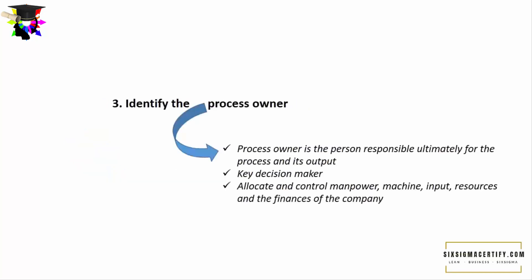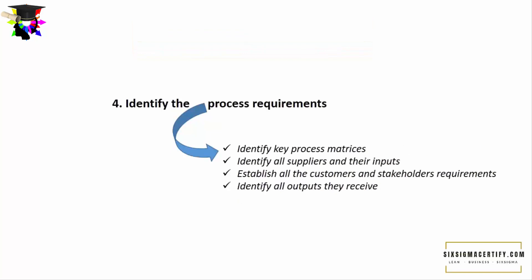The third step is the identification of the process owner. The process owner is the person ultimately responsible for the process and its output. He is the key decision maker and will allocate and control the manpower, machine, input, resources, and finances of the company. We should know exactly who is doing what job. The fourth step is identification of the process requirements — we should identify the key process metrics, all the suppliers and their inputs, establish all the customers' and stakeholders' requirements, and identify all the outputs. We should identify the process requirements before starting the SIPOC.